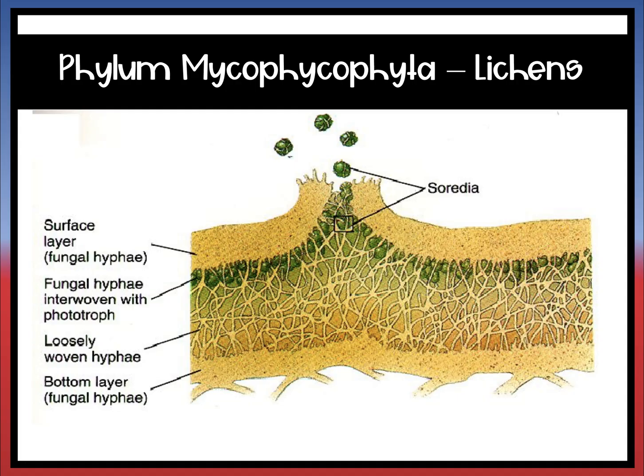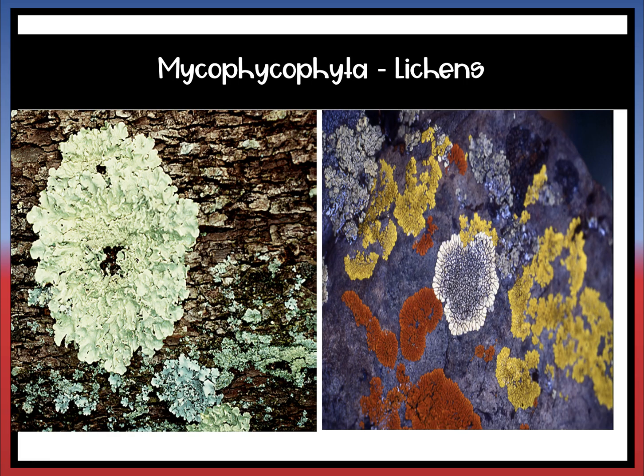The next phylum is Mycophycophyta, which is your lichens. You have probably seen lichens and may not have realized it's fungus. When you look at tree bark, it's usually the white, chalky-looking thing on the bark — that's actually lichen. It can take on different colors; in the image on the left you can see it's kind of a whitish-greenish color.